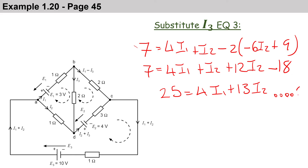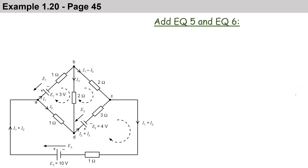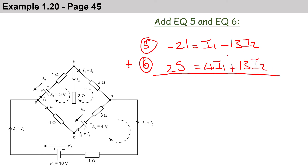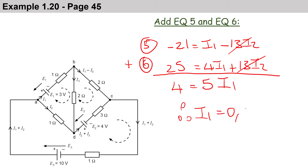Now we add equation 5 and equation 6. Equation 5: minus 21 equals I1 minus 13·I2. Equation 6: 25 equals 4·I1 plus 13·I2. Adding them, the I2 terms cancel, giving 4 equals 5·I1, so I1 equals 0.8 amps.